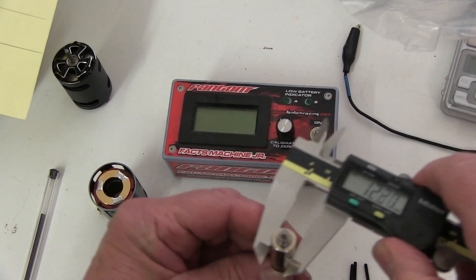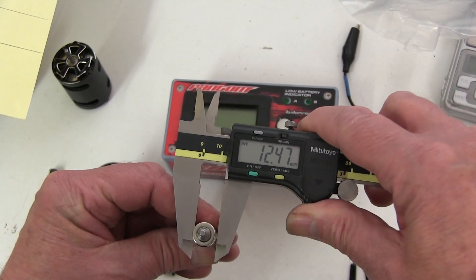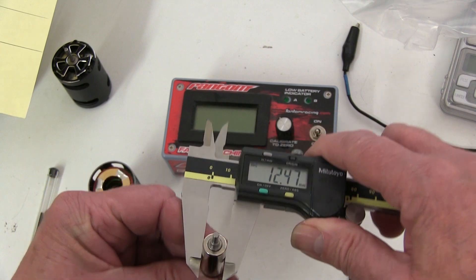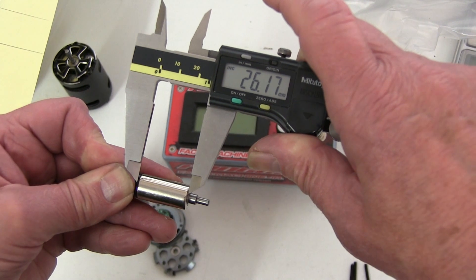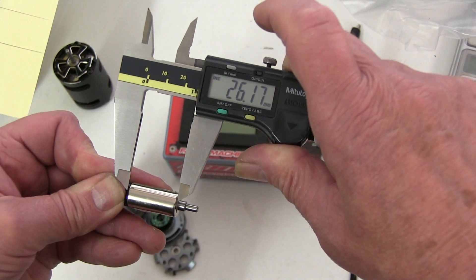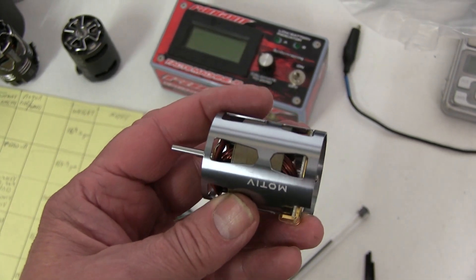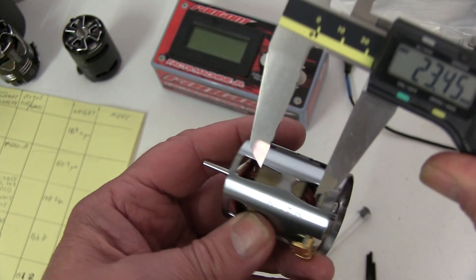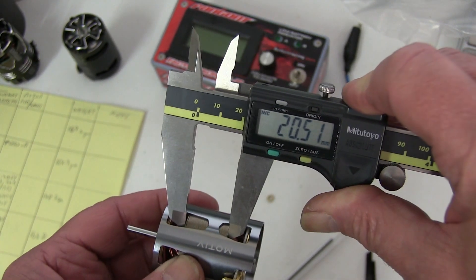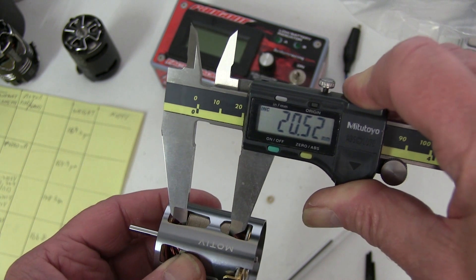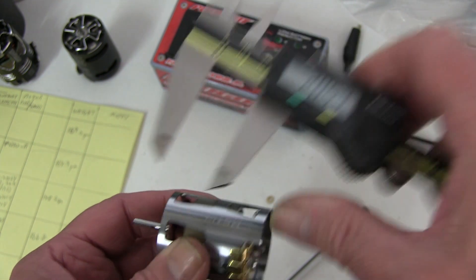I'll just check the stator diameter, it's near enough, just under 12.5, which it should be, and the length I should imagine would be about 20, just 26 millimeters, near enough. Stator length is quite easy to measure because of these massive holes, but there's some green epoxy on the end, it's going to make it slightly longer, so it's measuring about 20.5, but you've got to allow a bit for the epoxy.